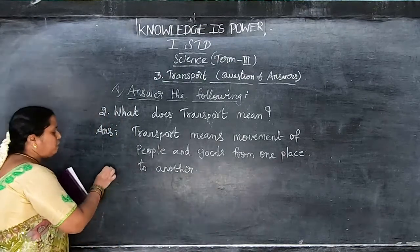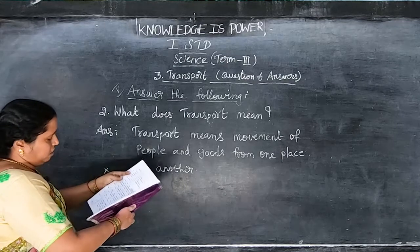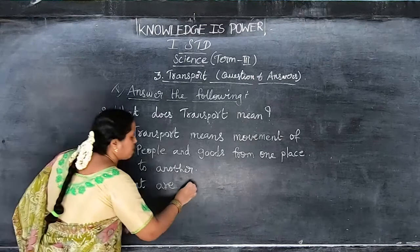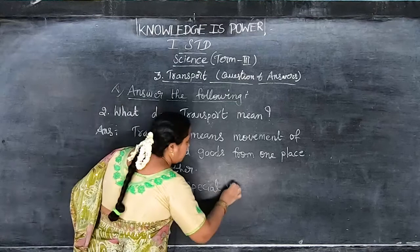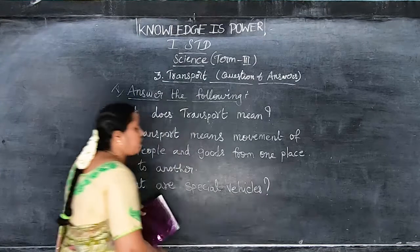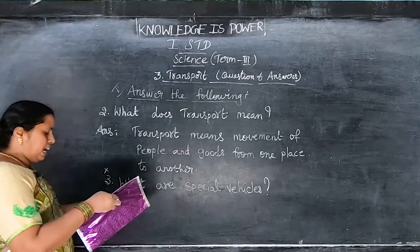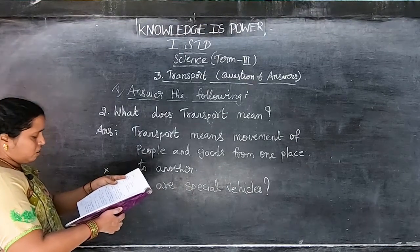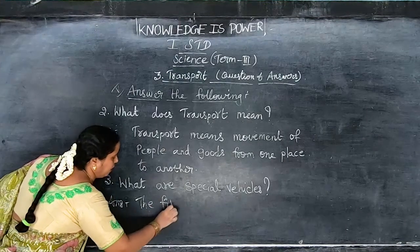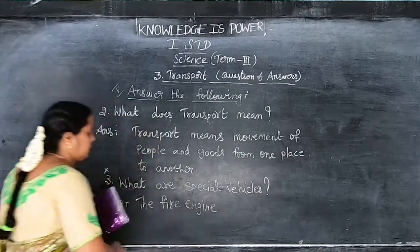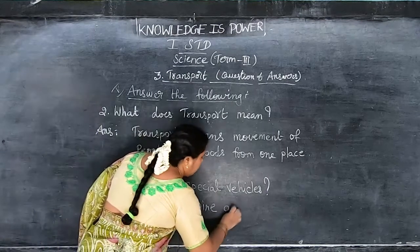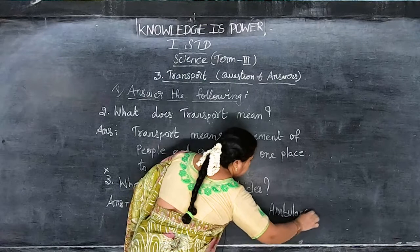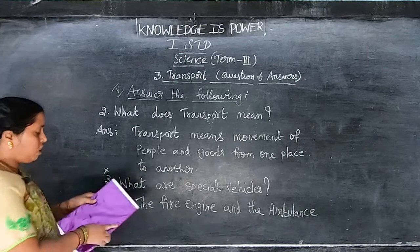Third question: What are special vehicles? Leave one line and write children, see the spellings. The fire engine, F-I-R-E E-N-G-I-N-E, and the ambulance, A-M-B-U-L-A-N-C-E, are special vehicles. These two only are special vehicles, as I told you in that class.